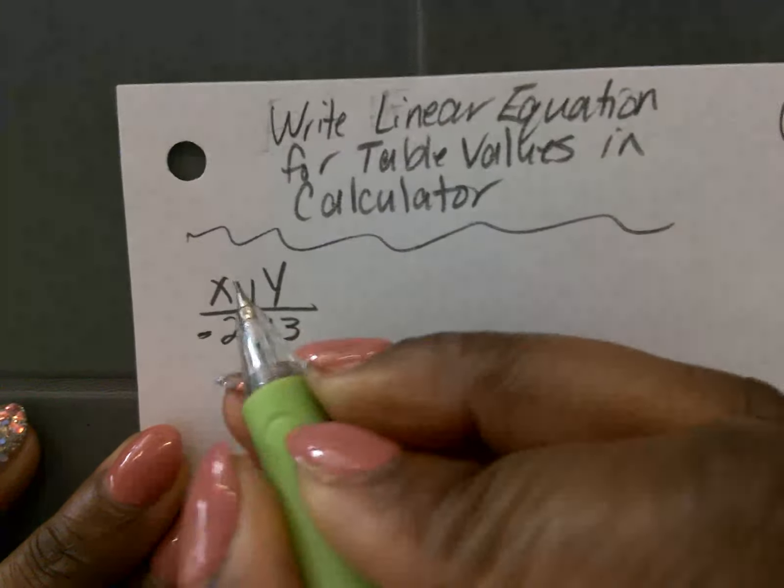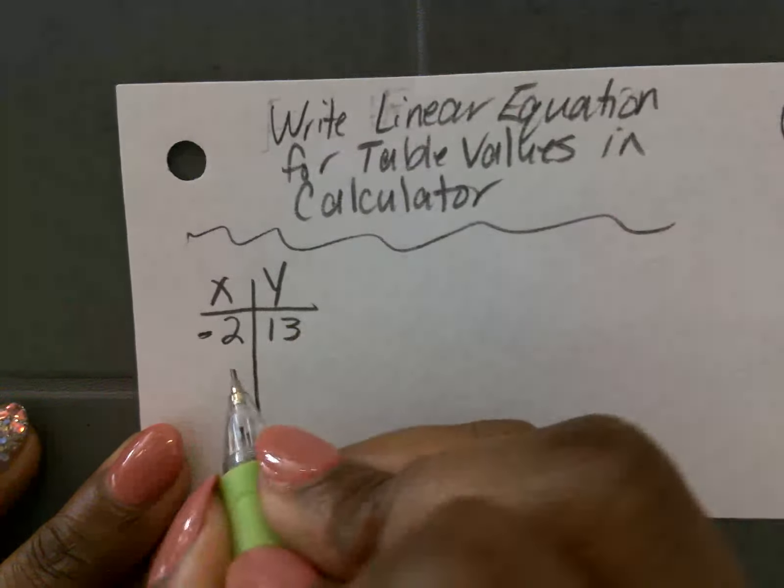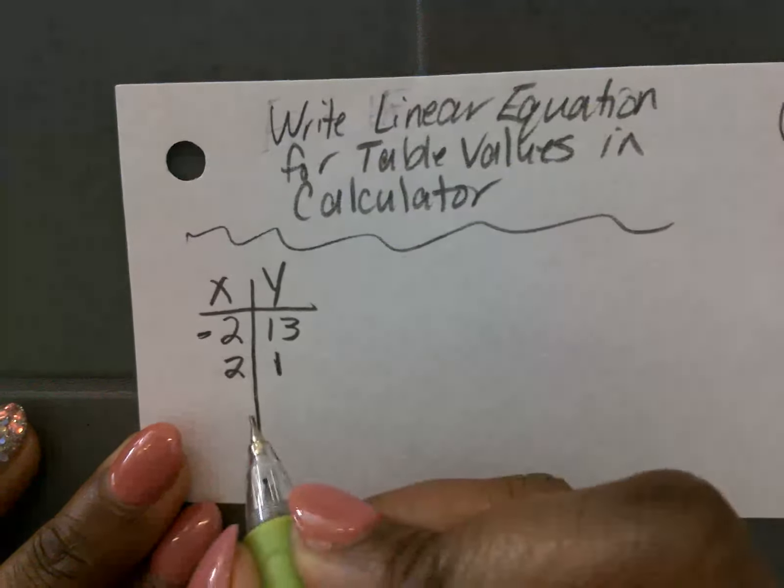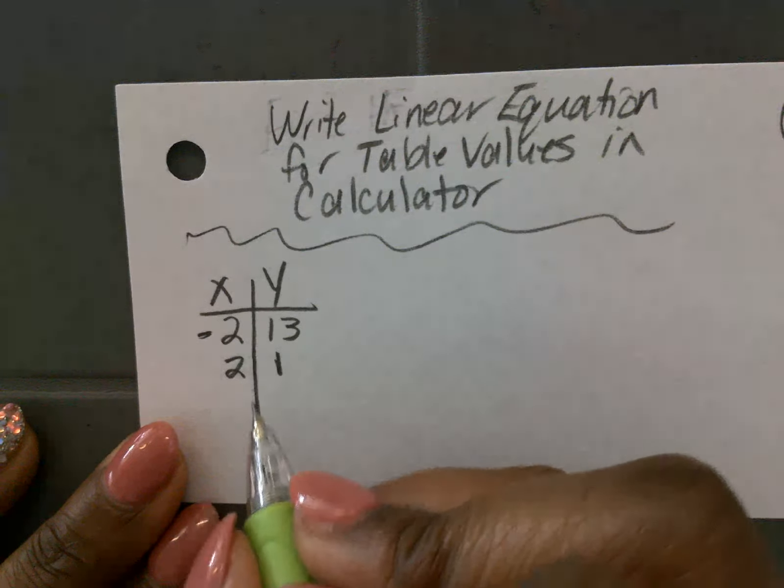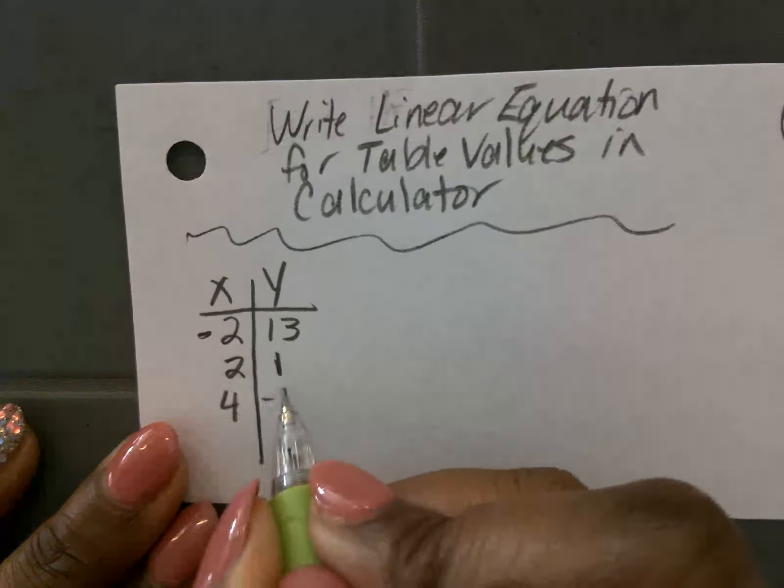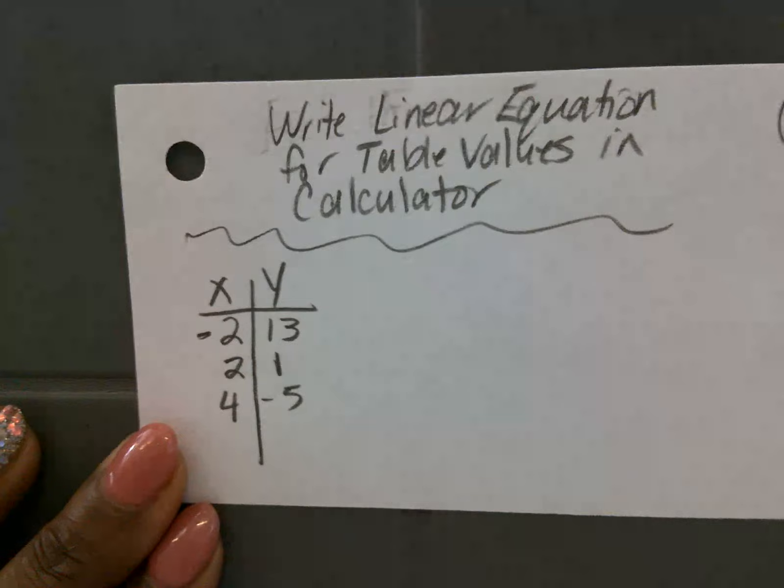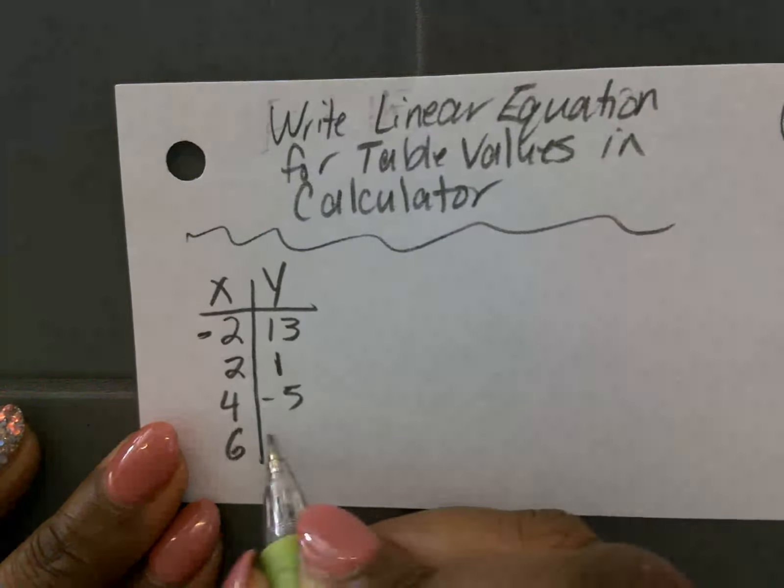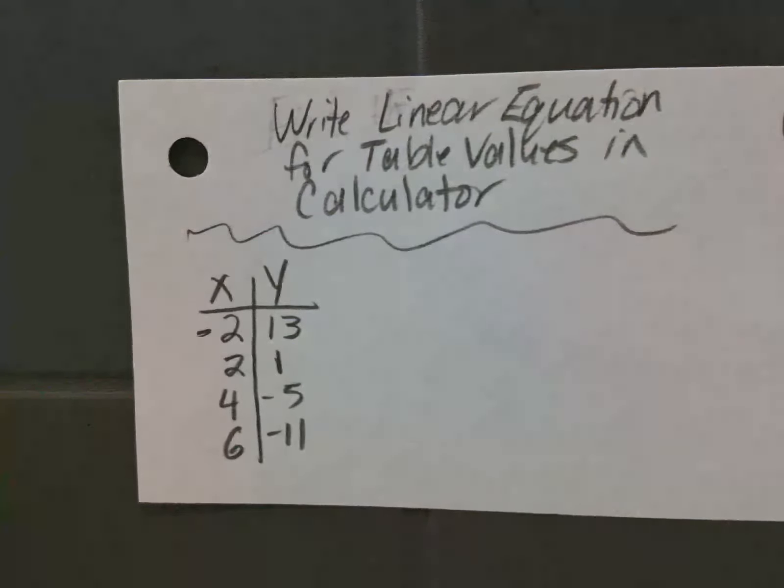All right, so let's do these. Let's do negative 2 and 13 as the ordered pair. Let's do 2 and 1. Let's do 4 and negative 5. Let's do one more point. Let's do 6 and negative 11.